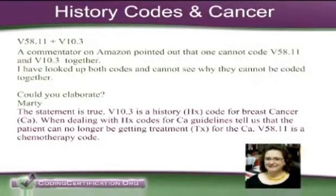Well, this is real easy. Marty is the one that had asked this. It's true, you cannot code these two codes together, because when you look up V10.3 and you read the guidelines of a history code, it states, for example, a code for breast cancer cannot be used — a history of breast cancer — if the person is getting treatment for breast cancer. Therefore, if you're going to use V10.3, that means it's a history.